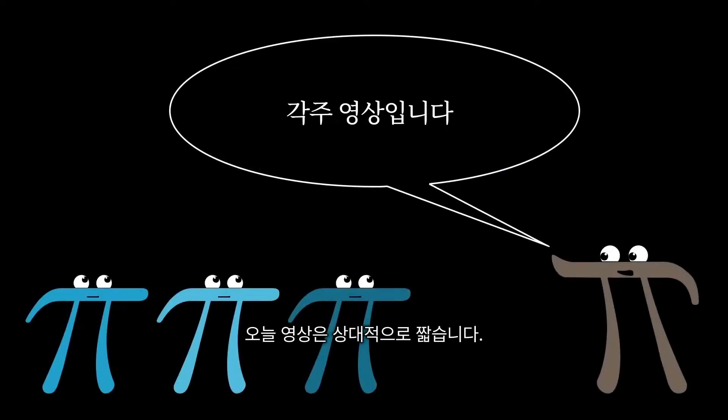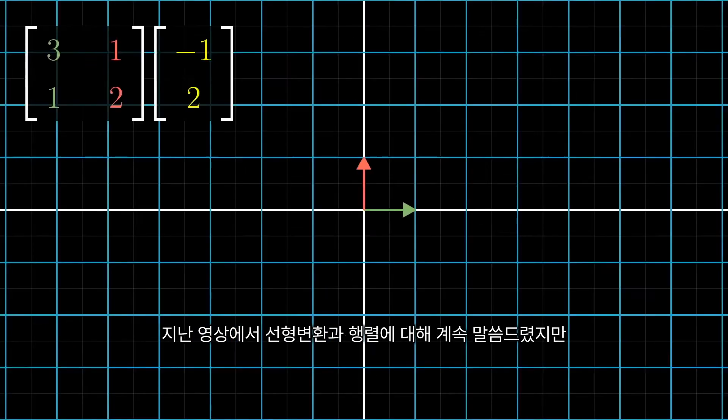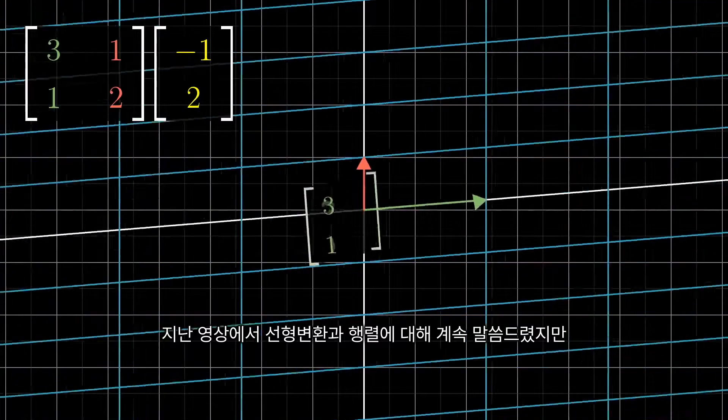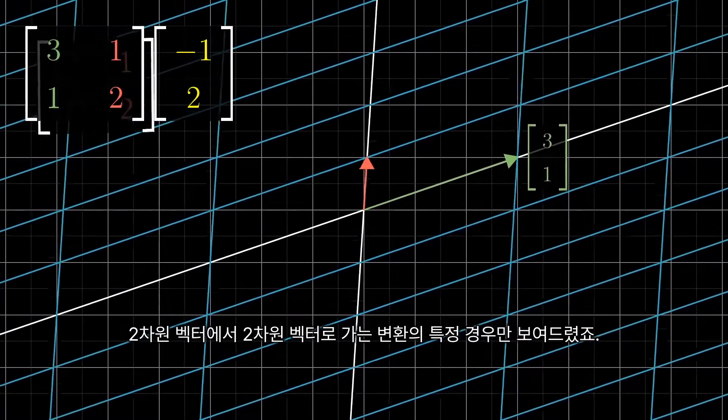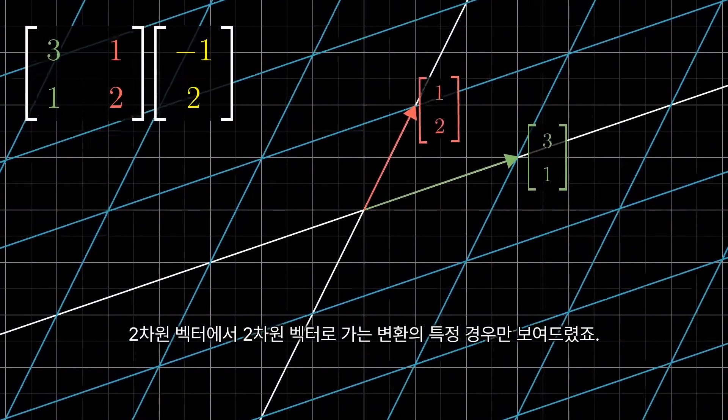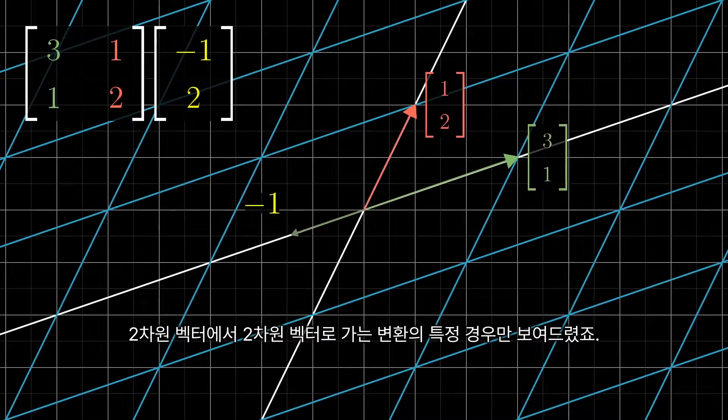Hey folks, I've got a relatively quick video for you today, just sort of a footnote between chapters. In the last two videos I talked about linear transformations and matrices, but I only showed the specific case of transformations that take two-dimensional vectors to other two-dimensional vectors.